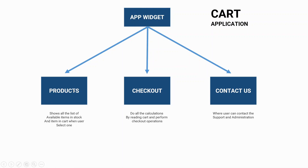Let me define these screens a little. The product screen will show all the list of available items in stock, and when the user taps a particular product or item, that will add it to the cart. Once he has done adding all the products, he can navigate to the checkout screen. The checkout screen will do all the calculation by reading exactly the same cart in which the user has added items and then performs all the checkout operations. The third screen, contact us, is just to connect the user with support and administration.